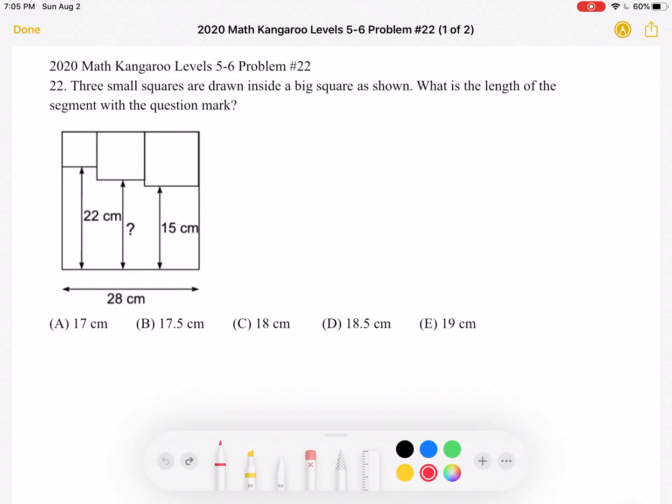This is the 2020 Math Kangaroo Levels 5-6, problem number 22. Three small squares are drawn inside a big square as shown. What is the length of the segment with the question mark?